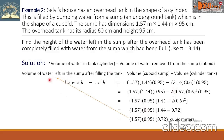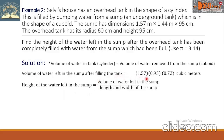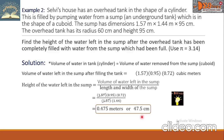To find the height of water left in the sump, divide the volume of water left by the length and width of the sump. Substituting: the numerator from the previous computation divided by 1.57 × 1.44. Canceling 1.57, the quotient is 0.475 meters, which converts to 47.5 centimeters — the height of water left in the sump.